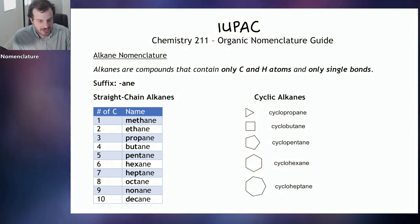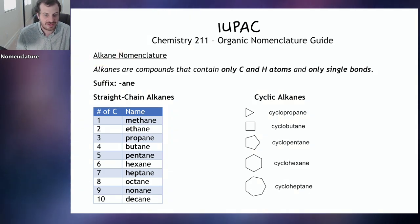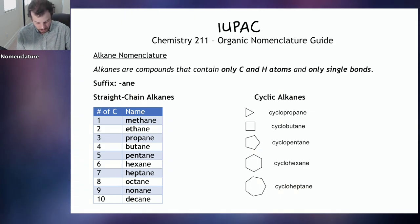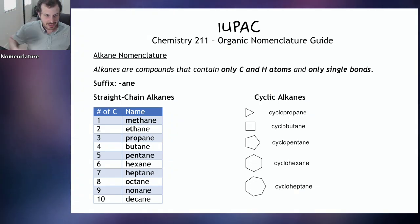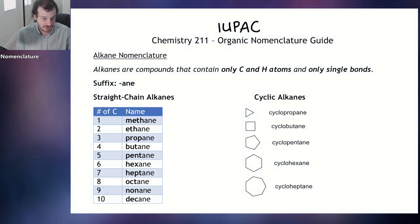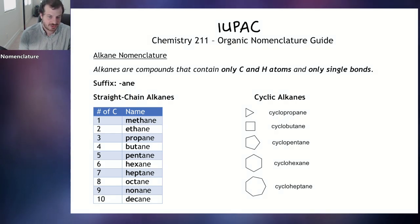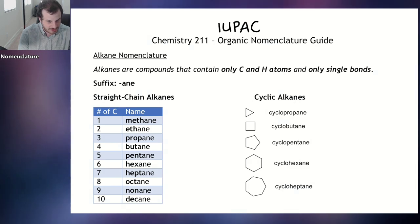The first types of compounds we're going to learn how to name are called alkanes. Alkanes are the simplest type of organic compound in organic chemistry. This whole organic nomenclature guide is available for download, so look down there and download it to follow along. Alkanes contain only carbon and hydrogen atoms and have only single bonds — no double or triple bonds, no oxygens. Just carbon, hydrogen, and single bonds. The simplest case scenario.